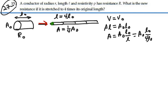L-naughts cancel out, and we see that the new area is one-fourth the old area. So that's the way we can prove it mathematically.